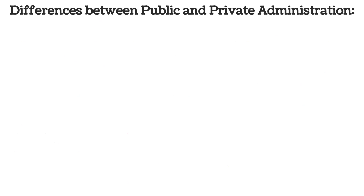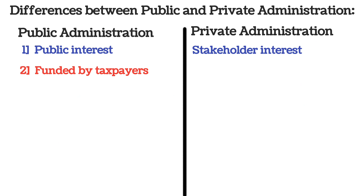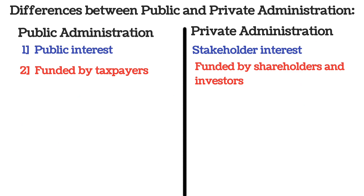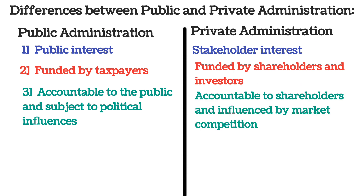Difference between public and private administration: Public administration, government और public interest की सेवा पर focus करता है, जबकि private administration profit पैदा करने और stakeholders के interest को पूरा करने पर focus करता है. Public administration को मुख्य रूप से taxpayers द्वारा funded किया जाता है, जबकि private administration को shareholders और investors द्वारा funded किया जाता है. Public administration जनता के प्रति जवाबदेह है और political influences के अंतर्गत है, जबकि private administration shareholders के प्रति जवाबदेह है और market competition से influenced है.